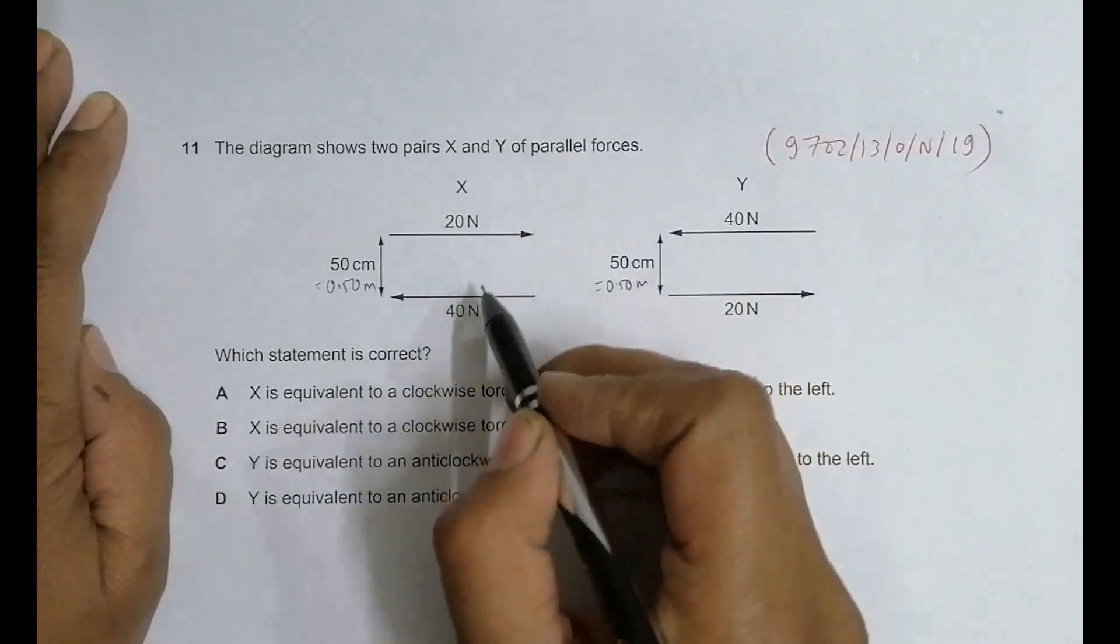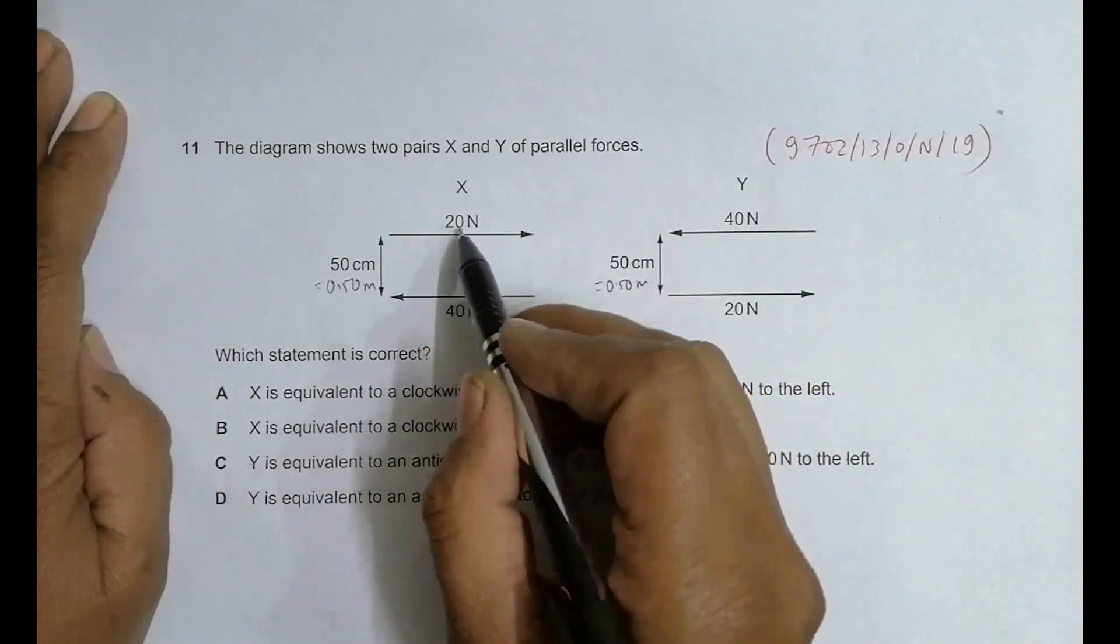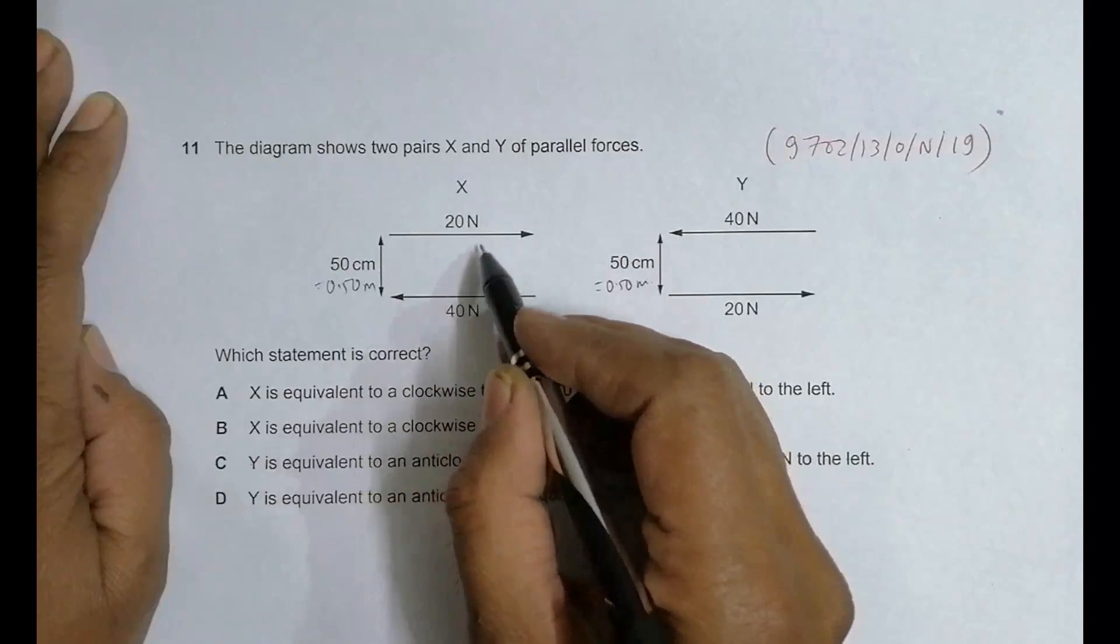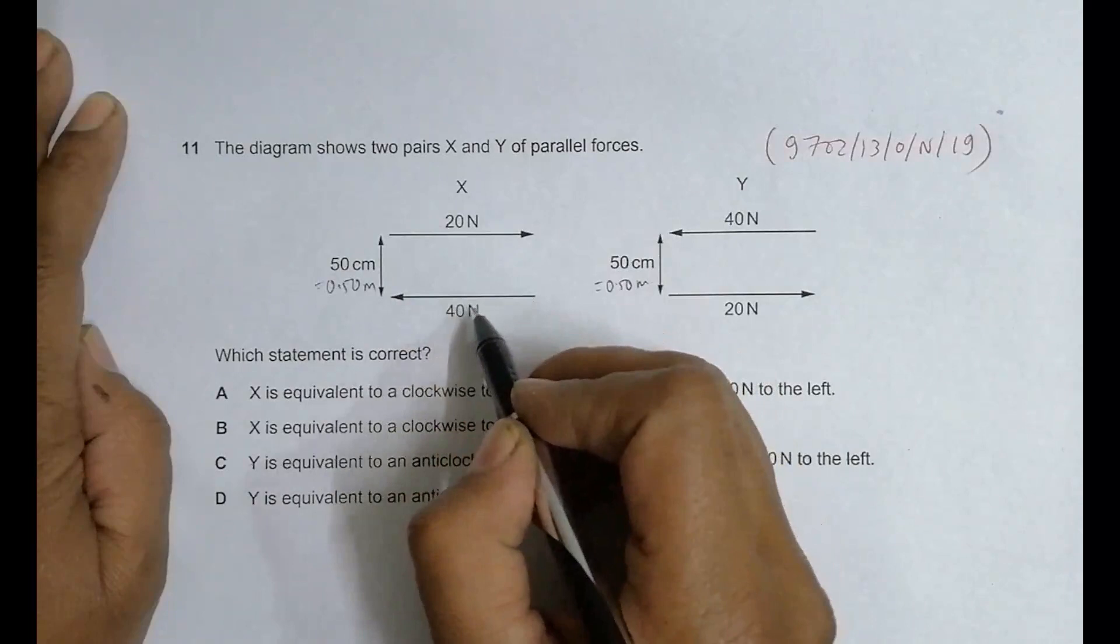Let's see - we have a 40 Newton force to the left and 20 to the right, so the first result is 20 Newtons, and it should be to the left because the left one is more.